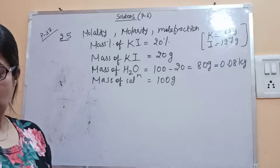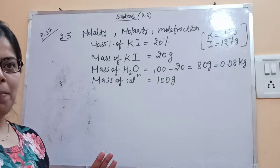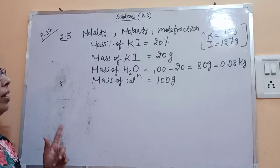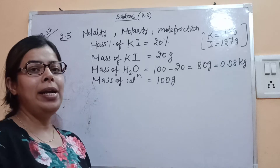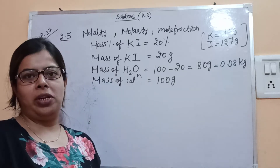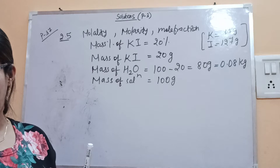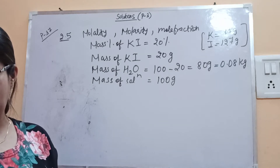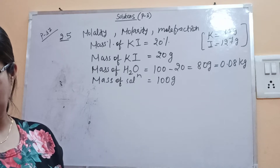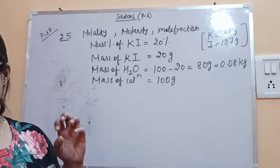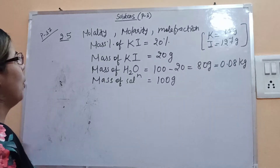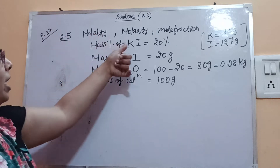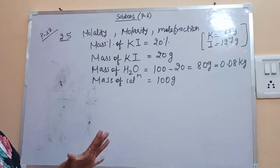Numerical 2.5 contains 3 parts: one is molality, one is molarity, and one is mole fraction — all of the same solution. The question asks us to calculate molality, molarity, and mole fraction of KI, if the density of 20% mass by mass aqueous KI solution is 1.202 gram per mL. Mass percentage of KI is 20%.